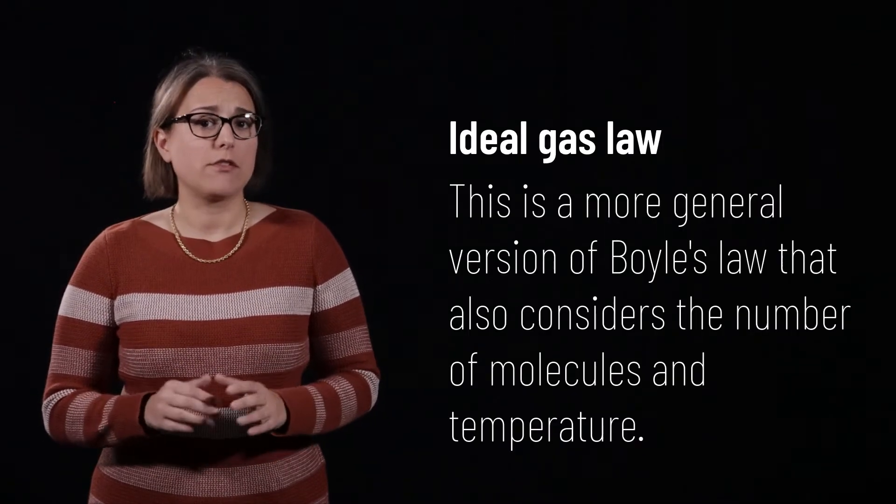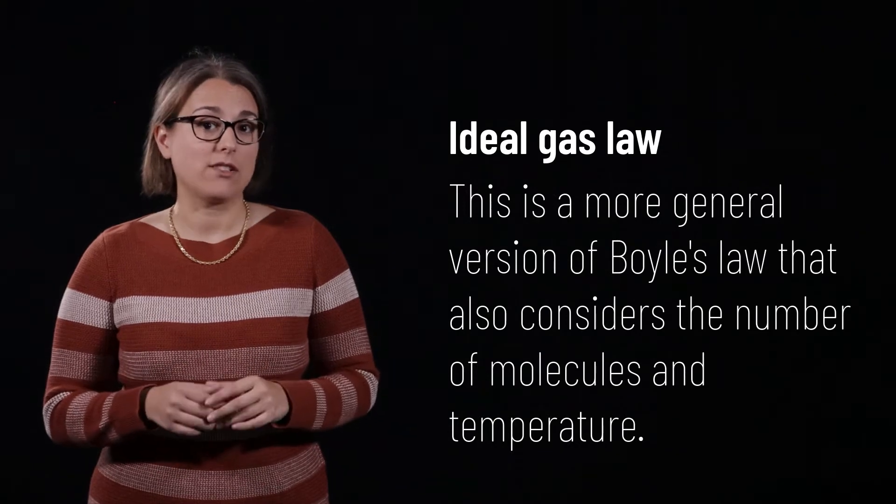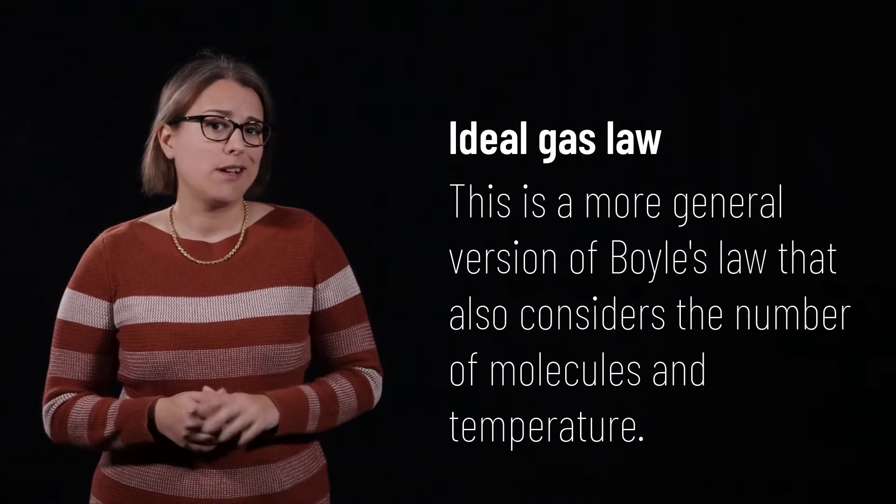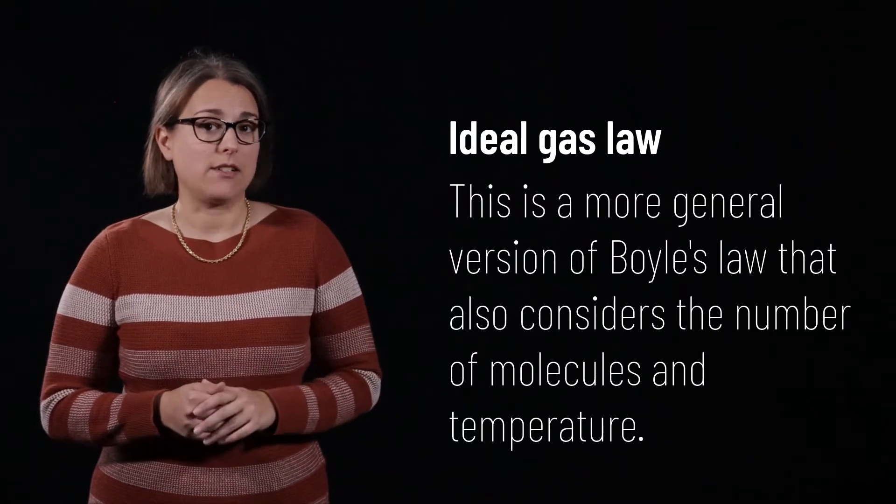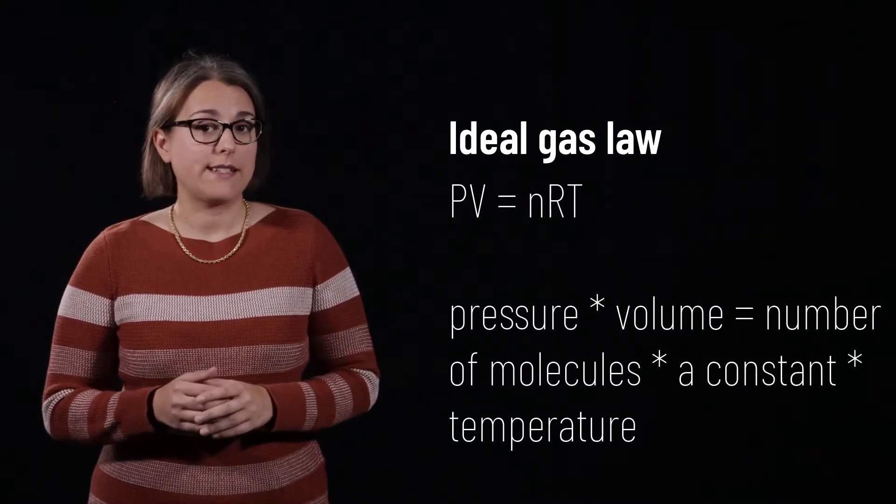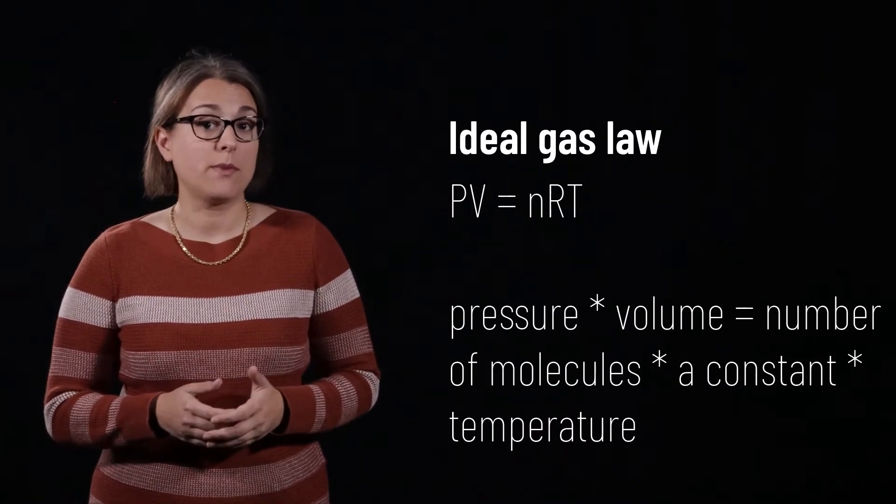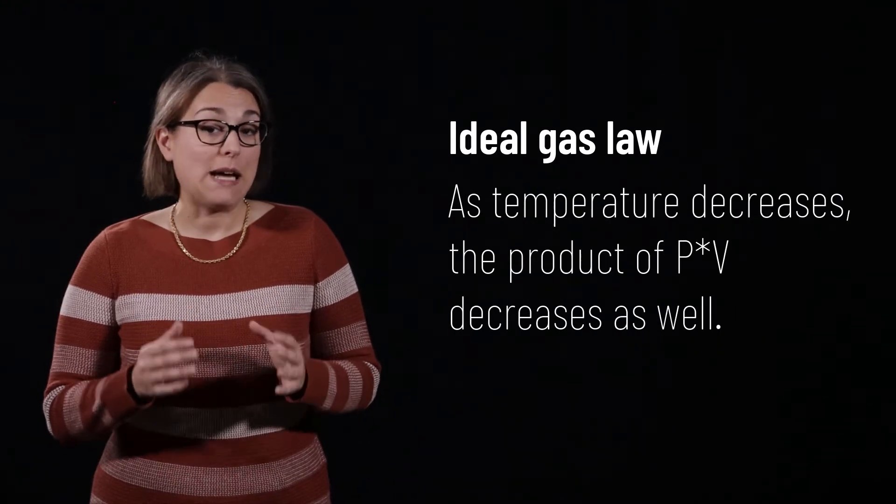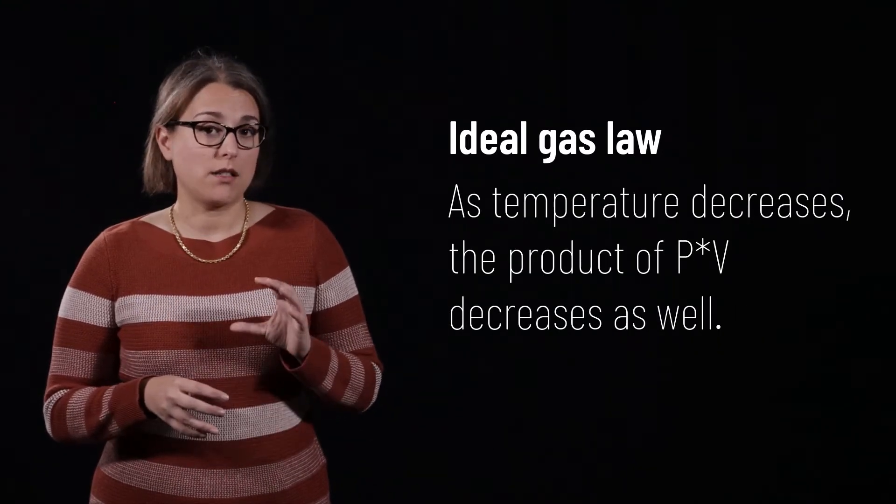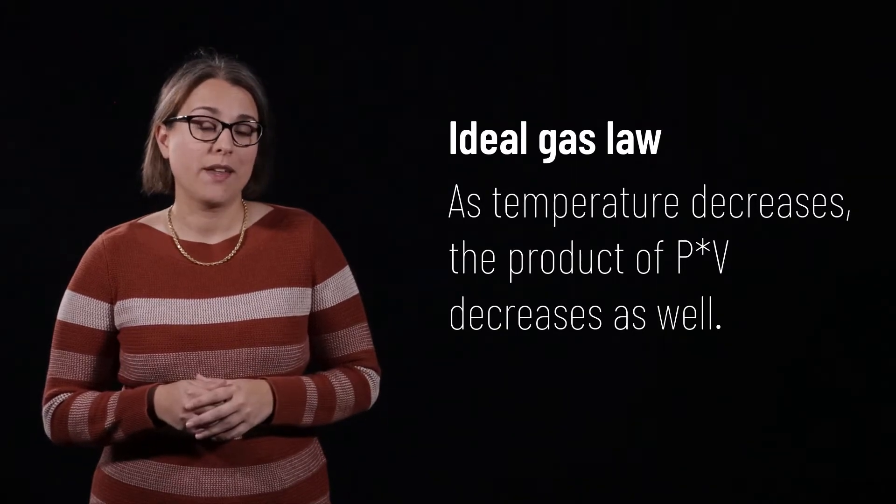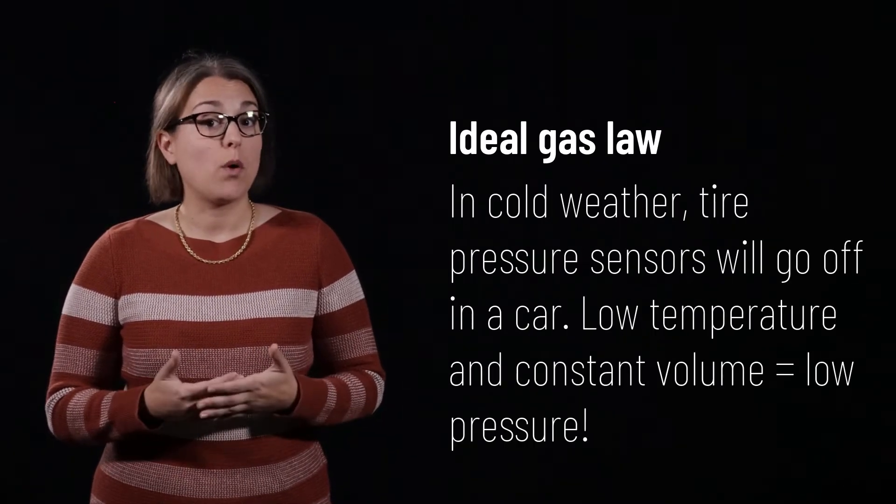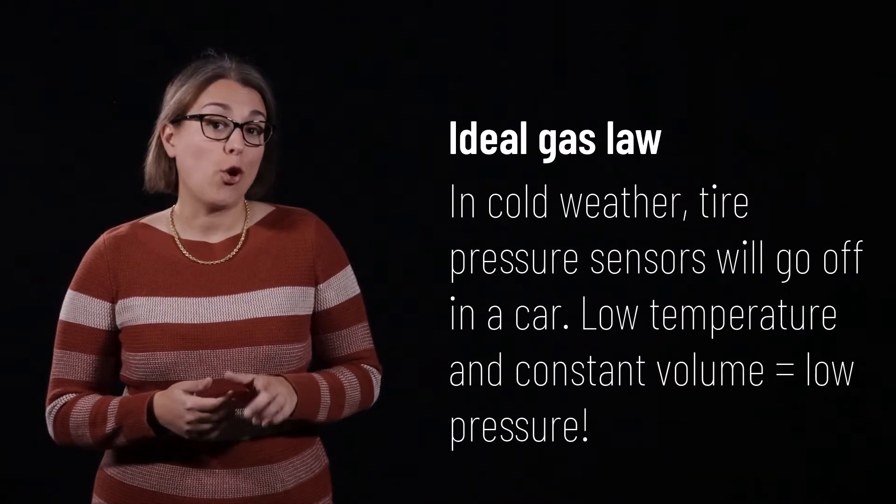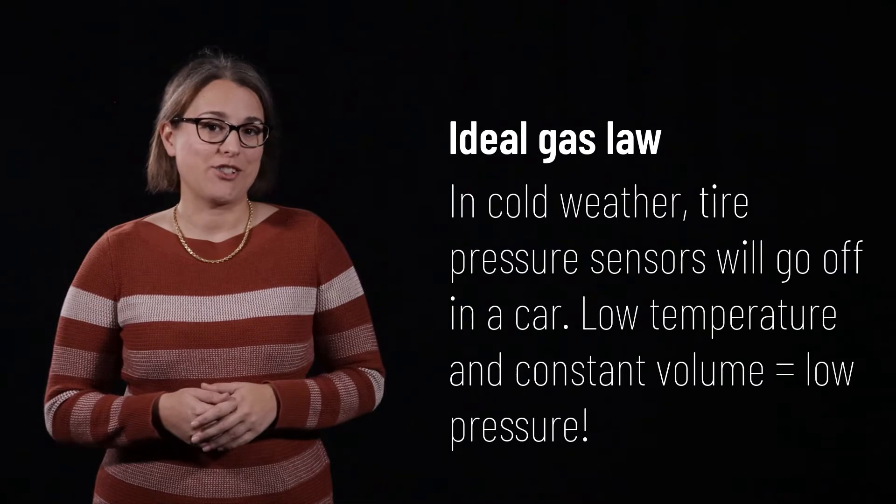A more general version of Boyle's law is the ideal gas law, which also considers temperature and the number of molecules involved. We will not go into details of this law other than to say that the ideal gas law tells us that volume and pressure are proportional to temperature. In other words, as the temperature decreases, the product of volume and pressure decreases as well. If you have a car with an automatic tire pressure sensor, you may notice that it goes off in the winter due to the cold weather causing tire pressure to decrease.